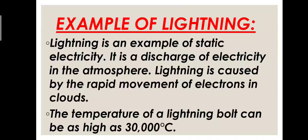Moving on to the second example of static electricity, which is lightning. Lightning means the thunderstorm which occurs in the atmosphere. Did you know that lightning is an example of static electricity? Lightning is caused by the rapid movement of electrons in clouds. Lightning is a discharge of electricity in the atmosphere — we can see the electrical thunder in the atmosphere because electrons are moving in the clouds, causing lightning.